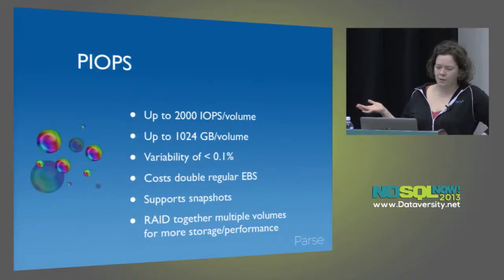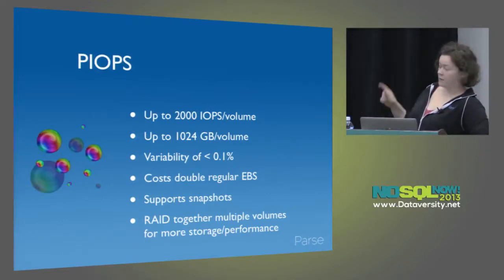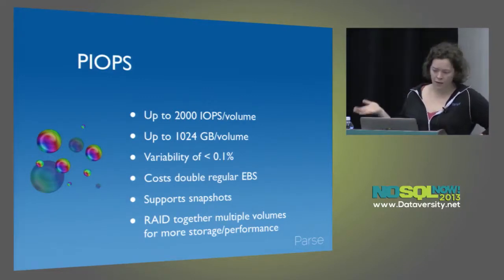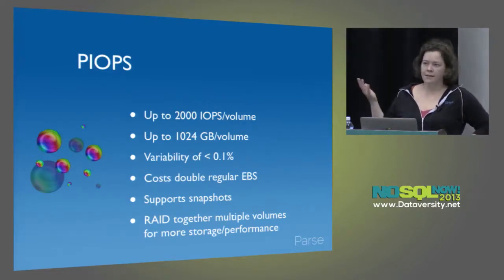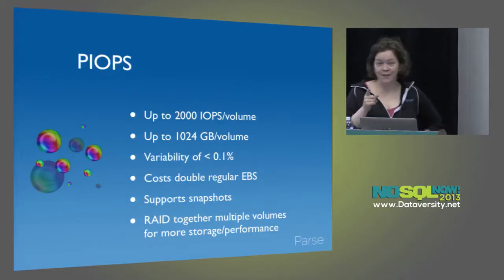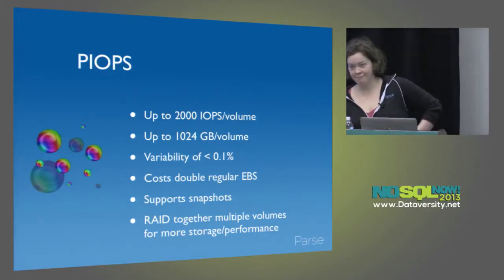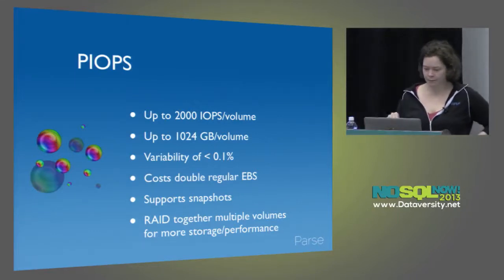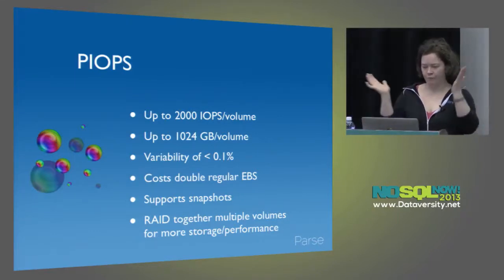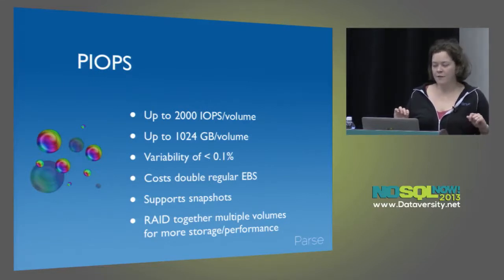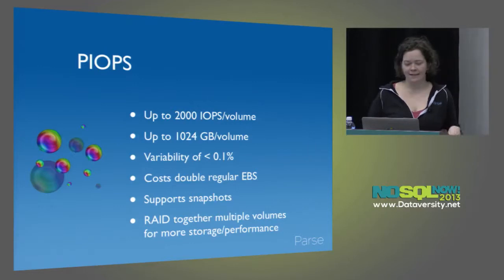With provisioned IOPS, you can provision up to 4,000 IOPS per volume, up to one terabyte per volume, and then you can RAID those together. The variability is guaranteed to be less than 0.1%. There are no performance guarantees with the ephemeral storage SSDs, but there are performance guarantees with provisioned IOPS. And if you need more disk space or IOPS, you just RAID them all together. Amazon doesn't say publicly what kind of disks back their provisioned IOPS, but if you benchmark them, they smell like SSDs.